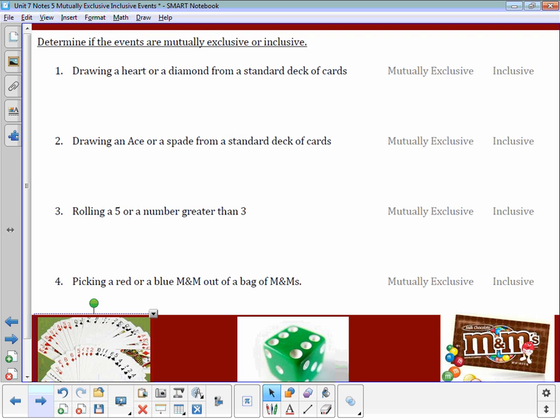Let's practice deciding whether things are mutually exclusive or inclusive. Number 1: drawing a heart or a diamond from a standard deck of cards. Is it possible for something to be a heart and a diamond at the same time? No, it's not. Those are two different suits. Since you can't be both, there's nothing that's going to fall into both categories. That means they're mutually exclusive.